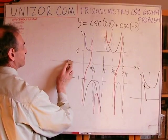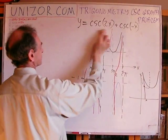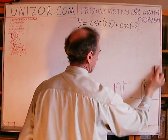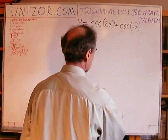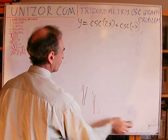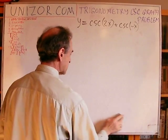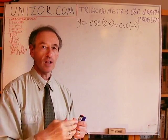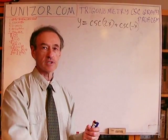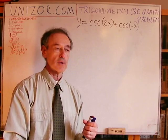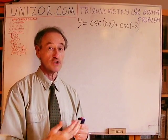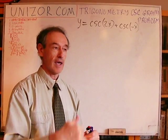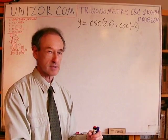That was an interesting exercise in how to add graphs — especially the consideration about infinities. When one graph goes to plus infinity and another to minus infinity, the question is which one is faster, which one is greater by absolute value. That infinity takes precedence.